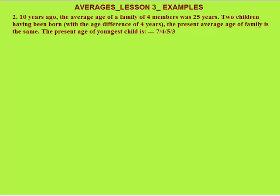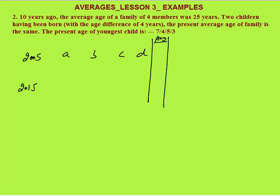The next question is very similar to the one just solved — please try to solve it yourself first. Ten years ago the average age of a family of four members was 25 years. Two children having been born with an age difference of four years, the average age of the family is still the same. Find the present age of the youngest child. Assume ten years ago is 2005. Let the four members be a, b, c, and d — their average age at that time was 25 years.